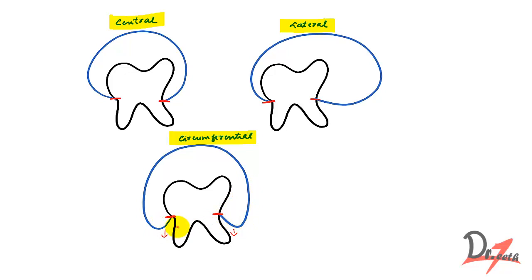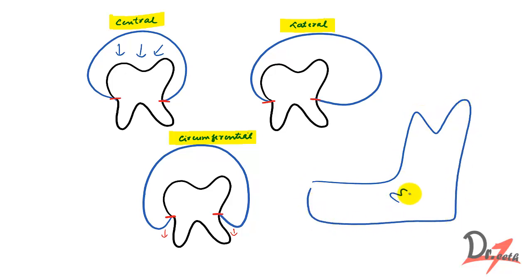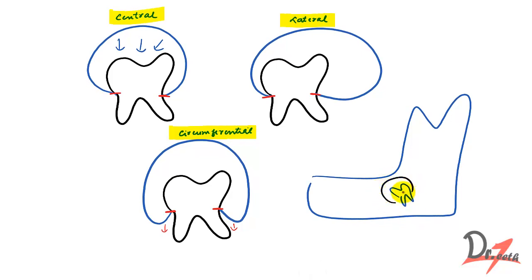You should also keep in mind that the cyst may displace or push the involved tooth to a considerable distance — sometimes shifting it to the ascending ramus. This cyst also has the potential to resorb the roots of adjacent teeth. Remember two words: displacement and resorption.